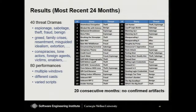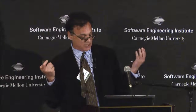In terms of results: we've produced 40 threat dramas covering all major categories — espionage, sabotage, theft, fraud, and so forth. We focus on character motives and behaviors: greed, family crises, resentment, misguided idealism. Conspiracies and lone actors, foreign agents, victims, and enablers all appear in our threats. We can produce different performances — take the same story, have different users perform it, run it in different background threat windows, and vary the behavior — creating families of related threat data. We've had 20 consecutive months with no confirmed artifacts, no reports of artifacts, notwithstanding the fact that these detectors are quite sensitive to finding such things.